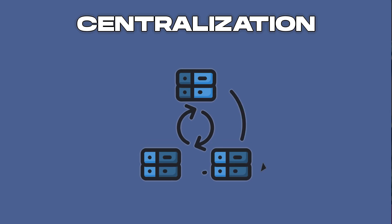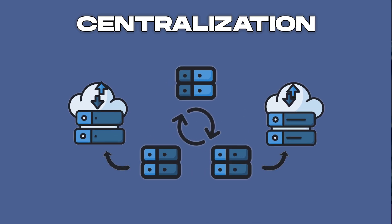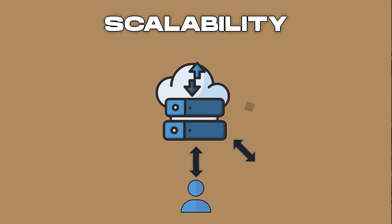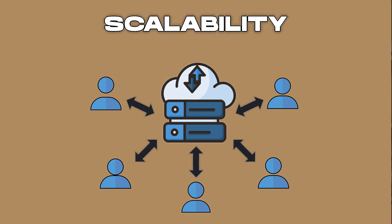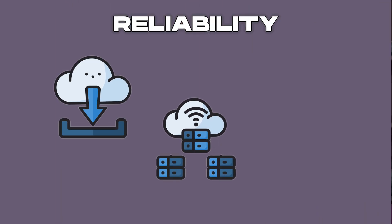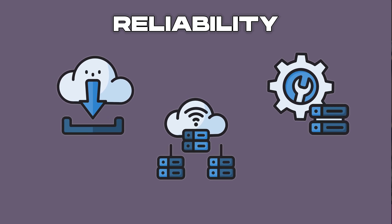Why are servers important? Well, they solve three critical problems. First, centralization — instead of every device storing every piece of information, servers act as a central hub that stores and distributes data efficiently. Second, scalability — a single server can handle requests from thousands or even millions of users, all at the same time. Third, reliability — servers use redundant systems, backups, and failover mechanisms to ensure your data is always available, even if hardware fails.